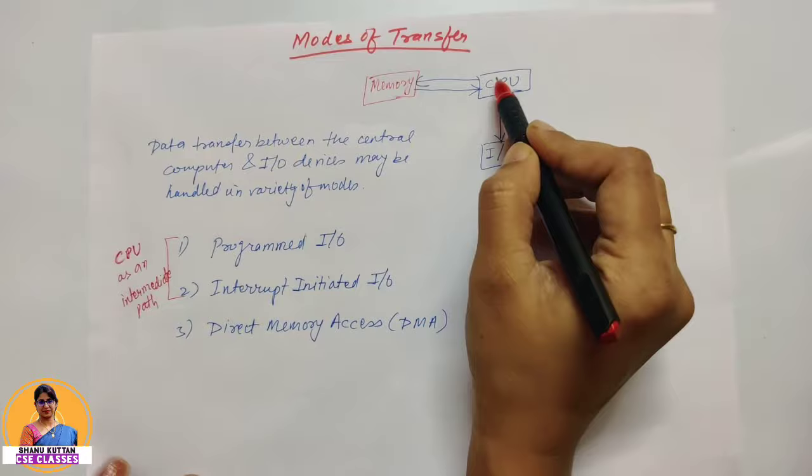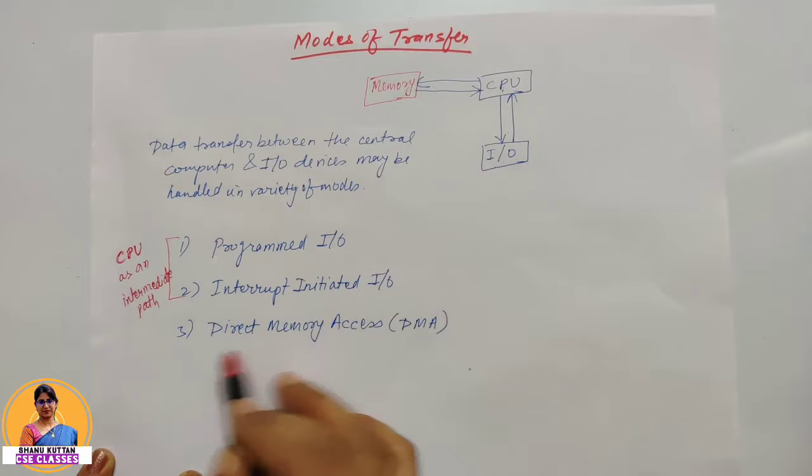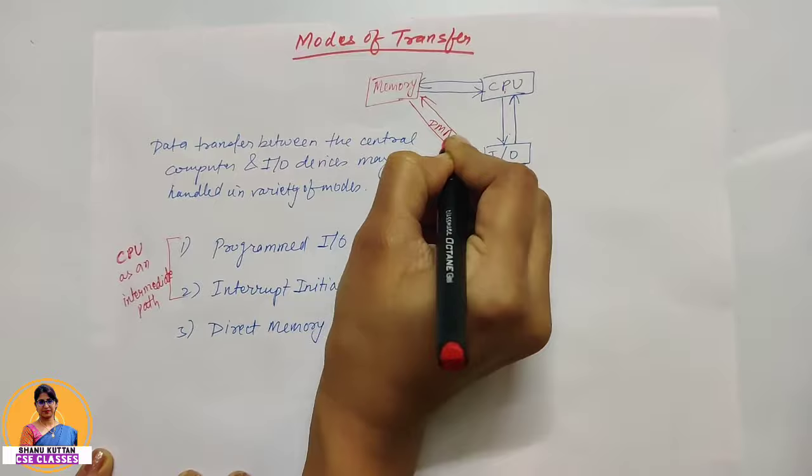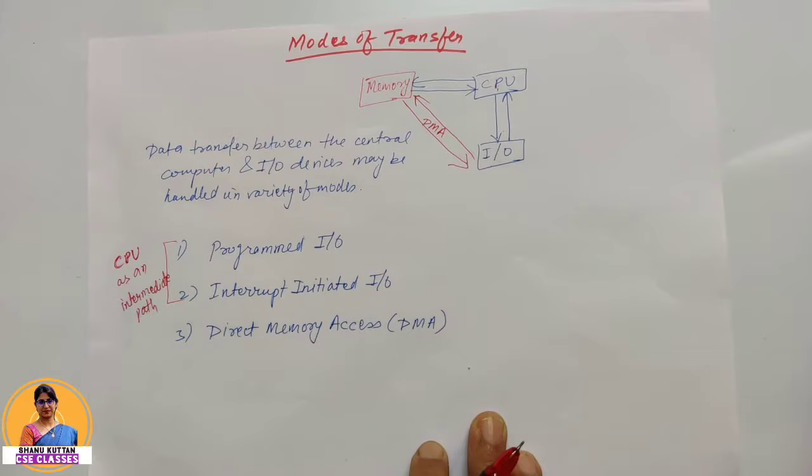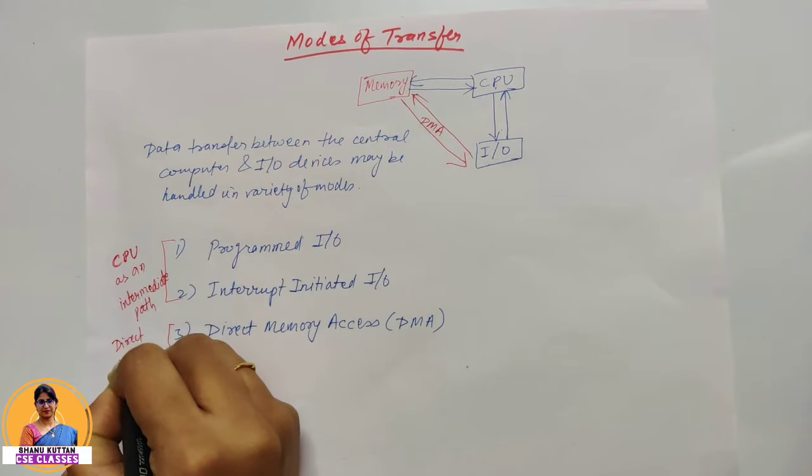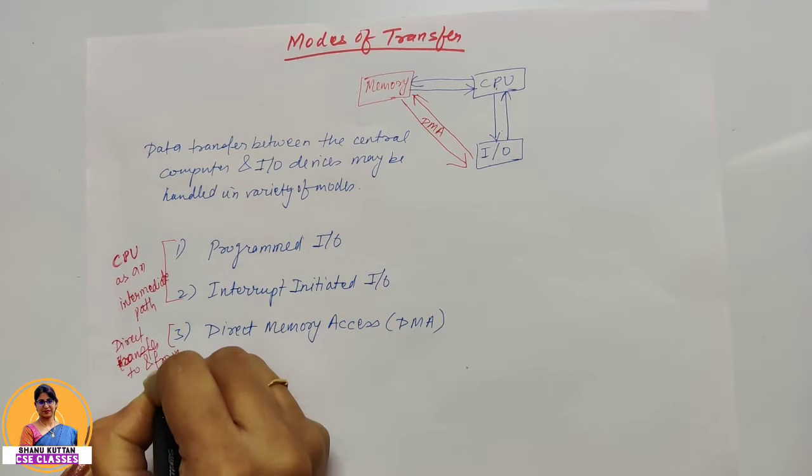The third mode is direct memory access. Here the name is clear that it is directly to the memory, which means that I/O devices can directly exchange data from memory. This is what we call DMA Direct Memory Access, which is a channel between both and a DMA controller which manages the data transfer directly.